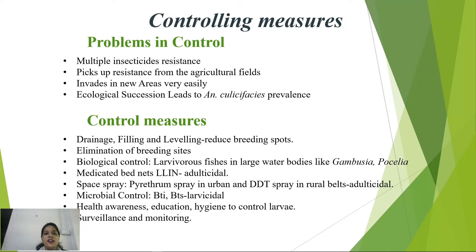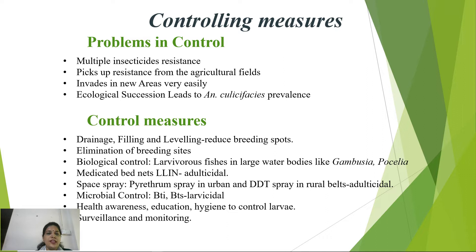Control measures include drainage, filling, and leveling of breeding spots; elimination of stagnant water where larvae breed is critical since adult mosquitoes are aerial but egg, larval, and pupal stages occur in water. Biological control involves larvivorous species like Gambusia and guppy fish. Medicated bed nets and adulticidal sprays using botanical pyrethrum, microbial control using BTi and BTs, health awareness education, hygiene, surveillance, and monitoring are additional measures.